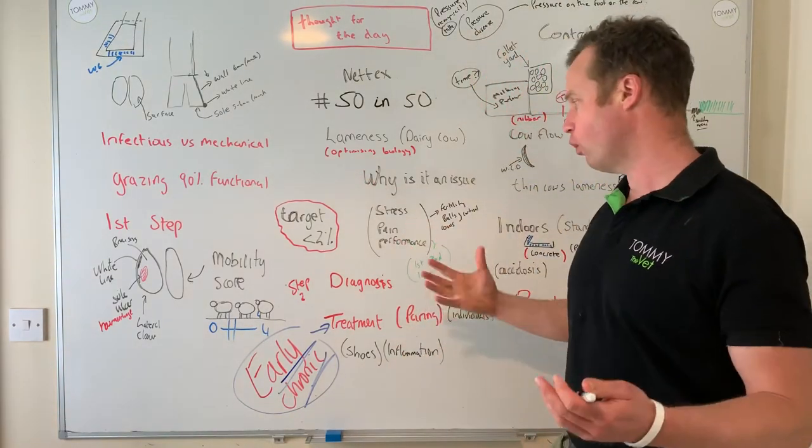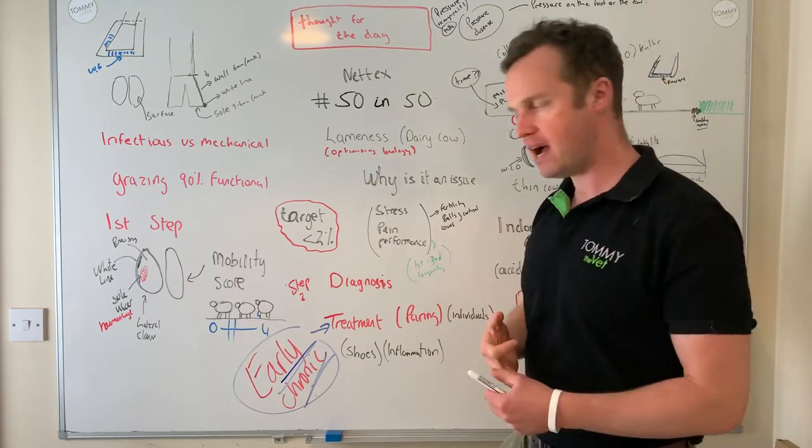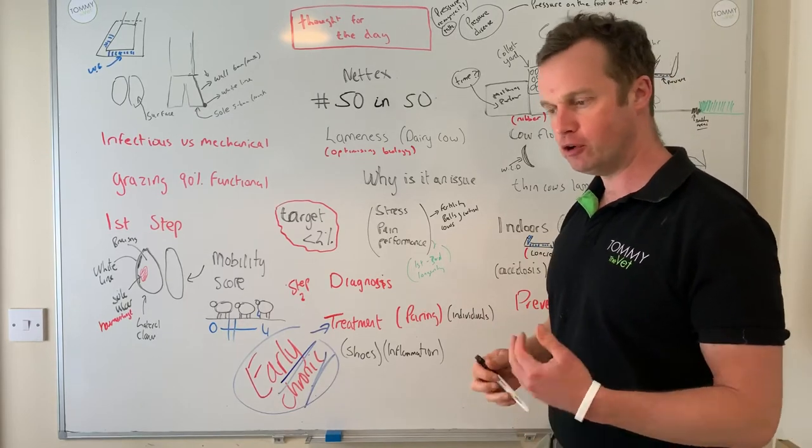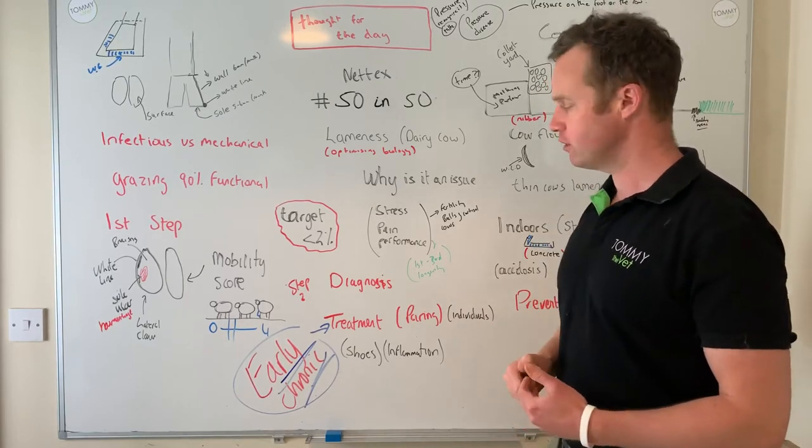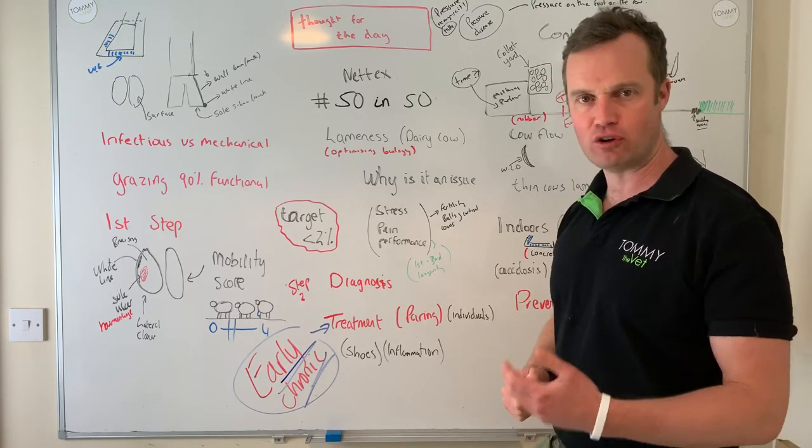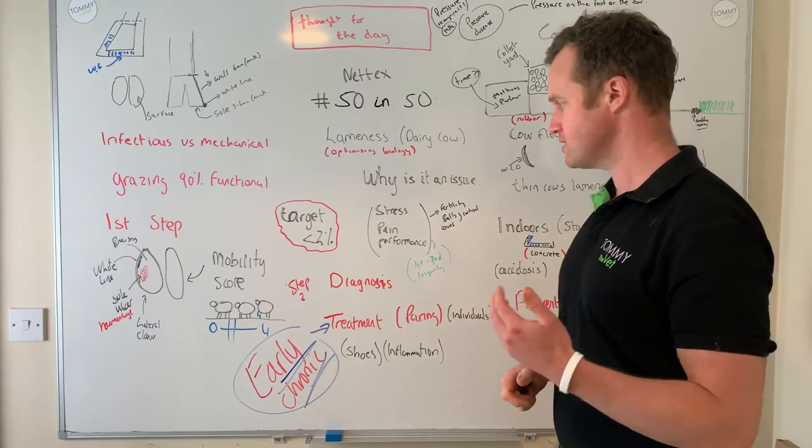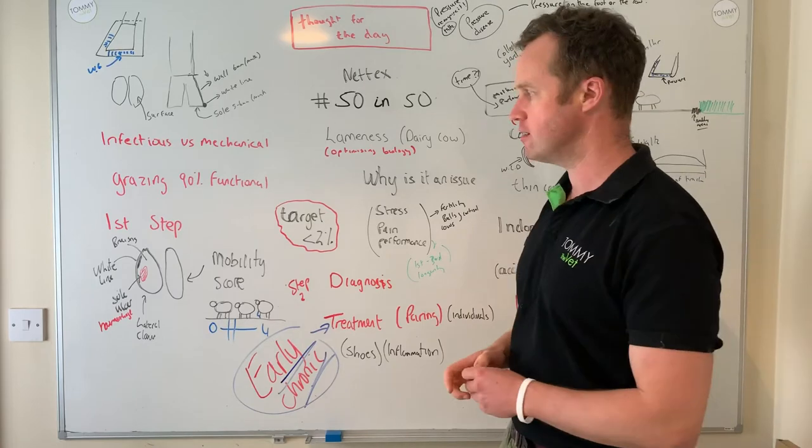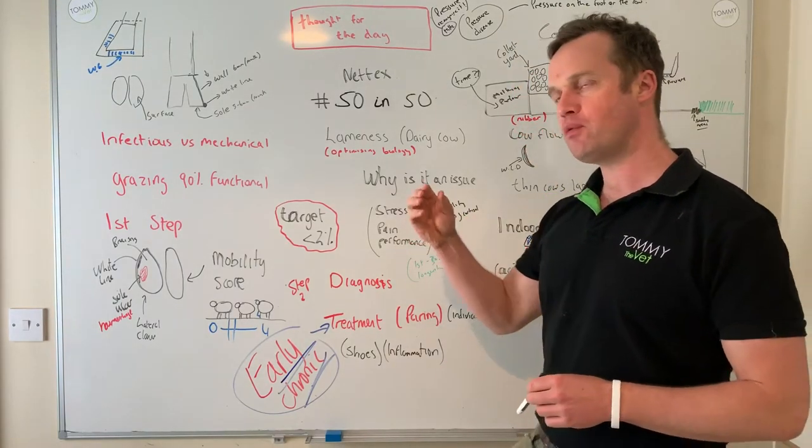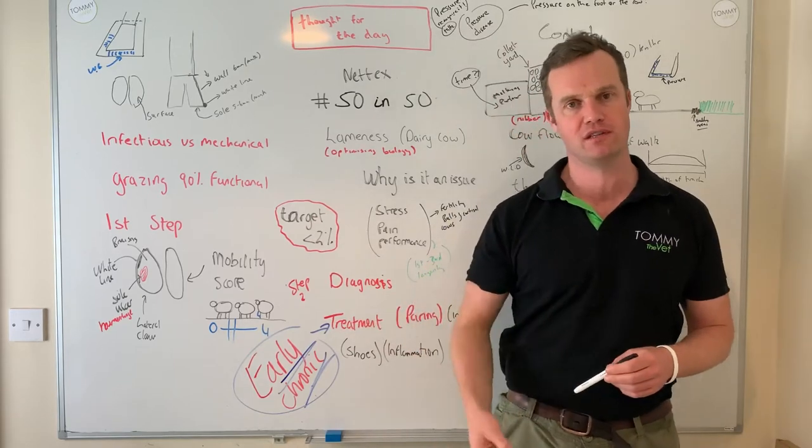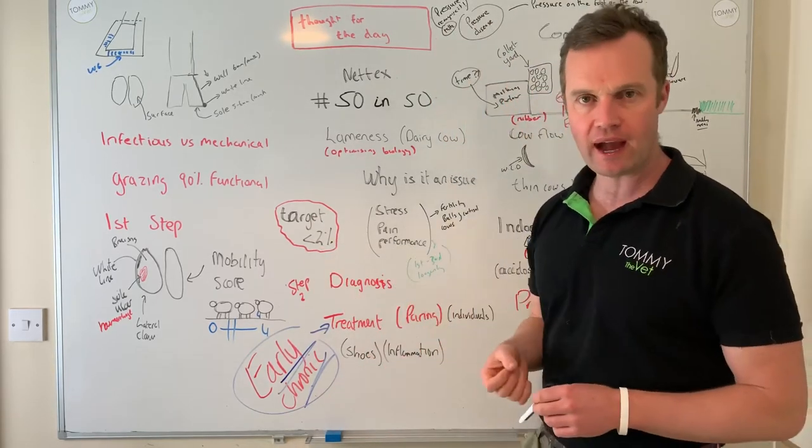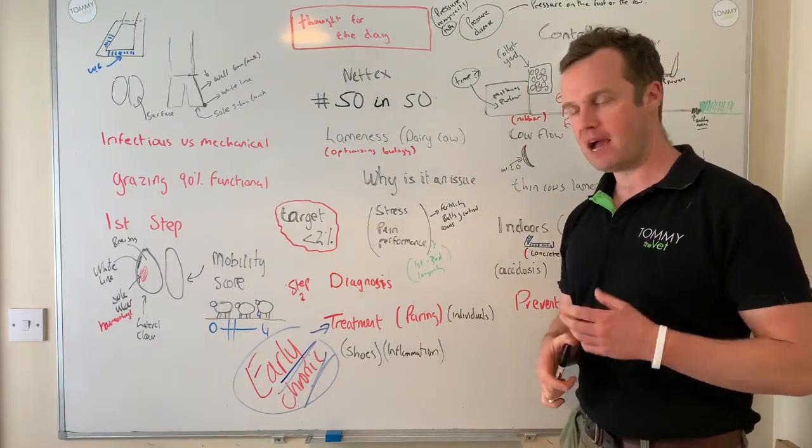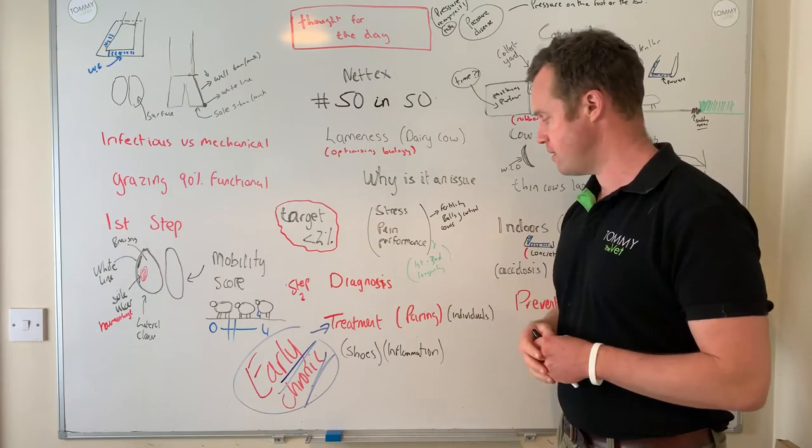Why is it an issue? Of course it's very obvious: stress, pain, massive implications on performance and welfare. Keeping cows in our herds from a productive point of view, your heifer will produce 25-30% less than your third, fourth and fifth lactation animal. It just makes absolute sense to minimize issues to keep our cows in our herds and lameness is a big one. Right now on Irish farms, fertility and breeding is occurring. Will a lame cow go in calf? Massive impact on fertility.